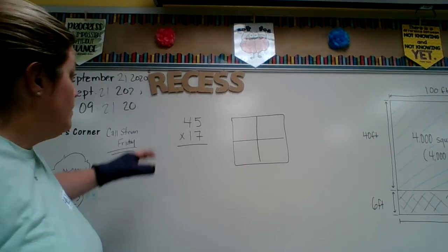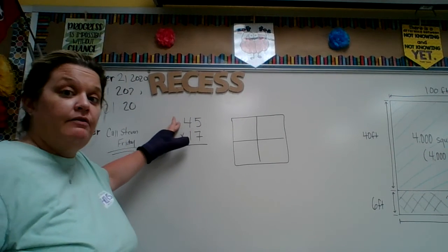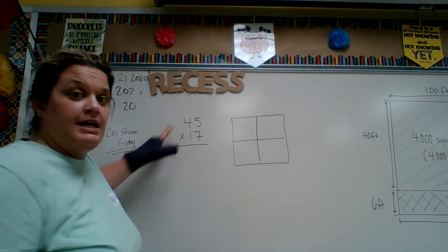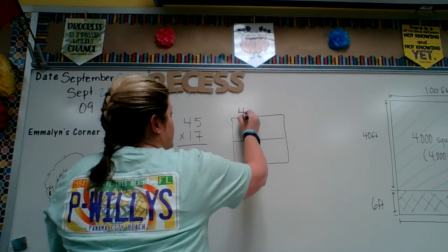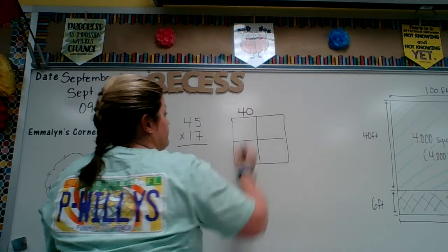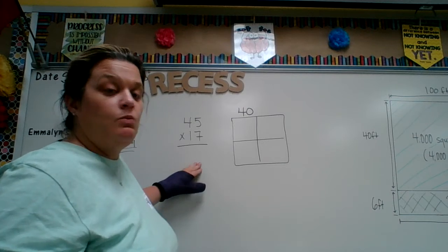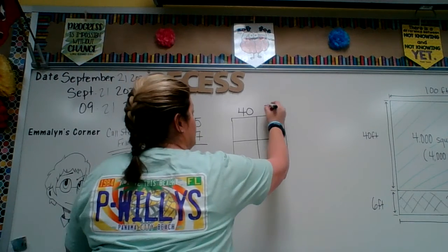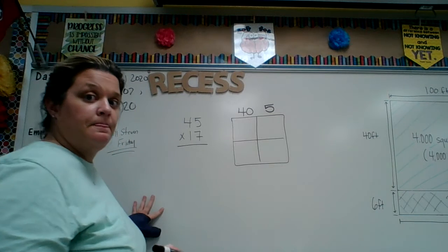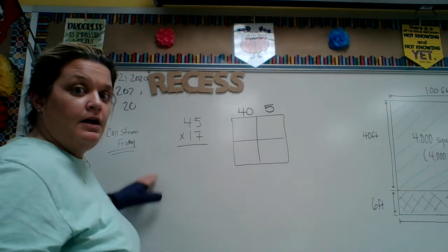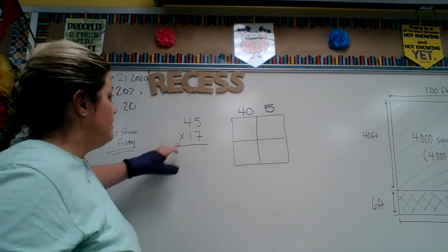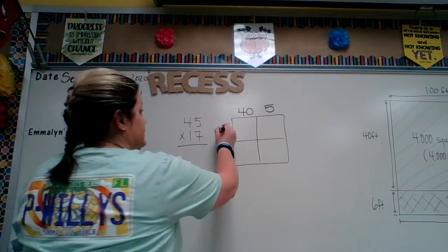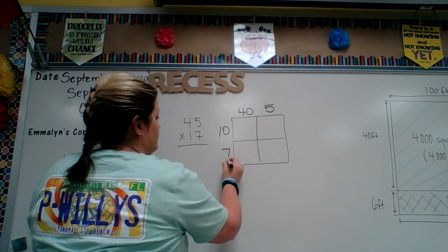So for example, 45. How many tens are there? There's four tens, so you would put 40 right here. And how many ones are there? There's 5, so 5 right there. And the next number is 17. How many tens are there? There's 1, so that's 10. And there's 7 ones.